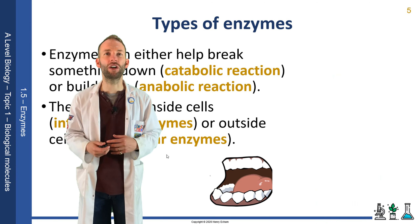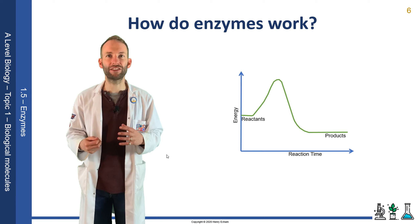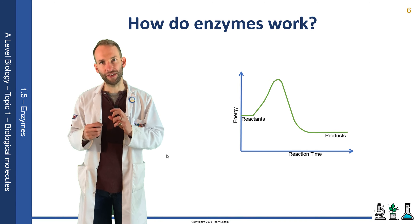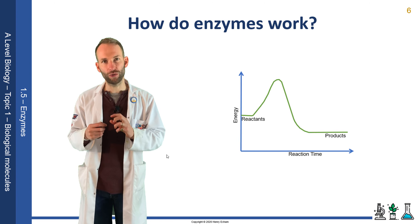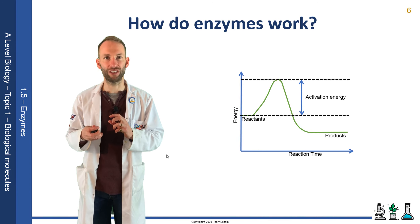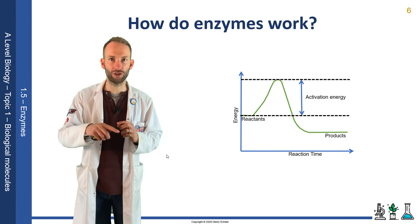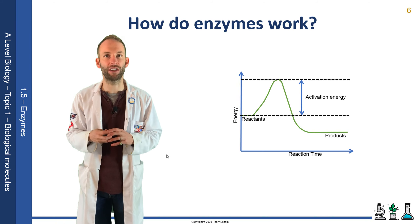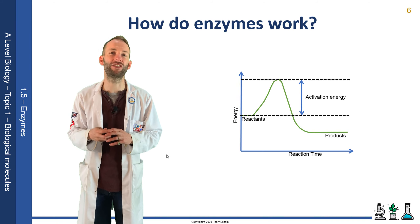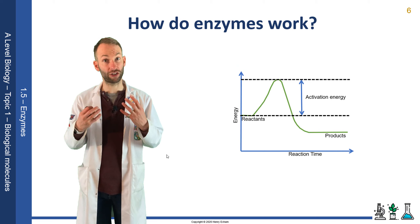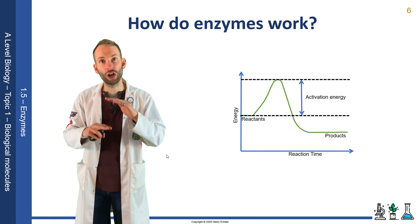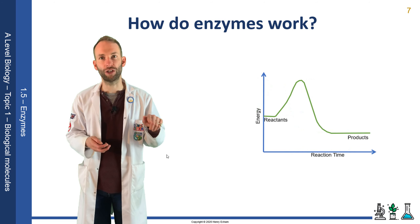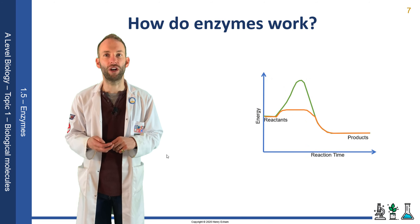Enzymes speed up the rate of reaction. For a reaction to occur there has to be enough energy, and we call this the activation energy, as shown on the graph here. You've got to give it enough energy for the reaction to actually happen and get the product. Enzymes work by binding to the reactants and lowering the activation energy required to make those products, as shown by the red line on the graph.